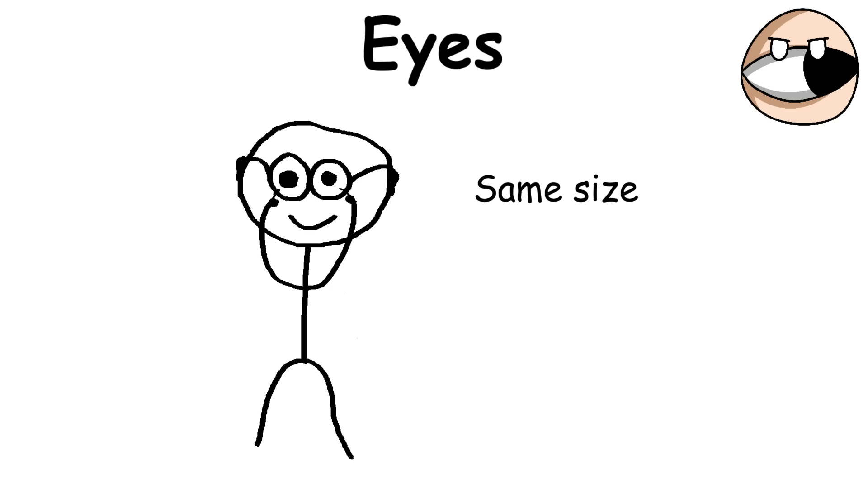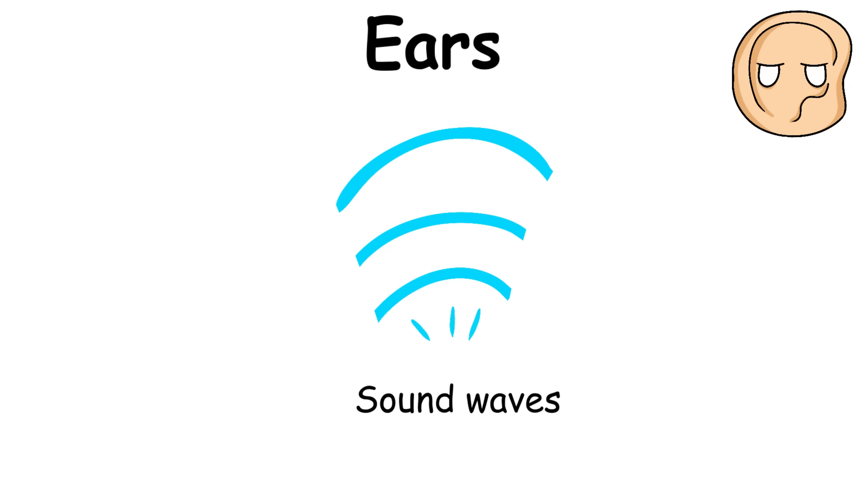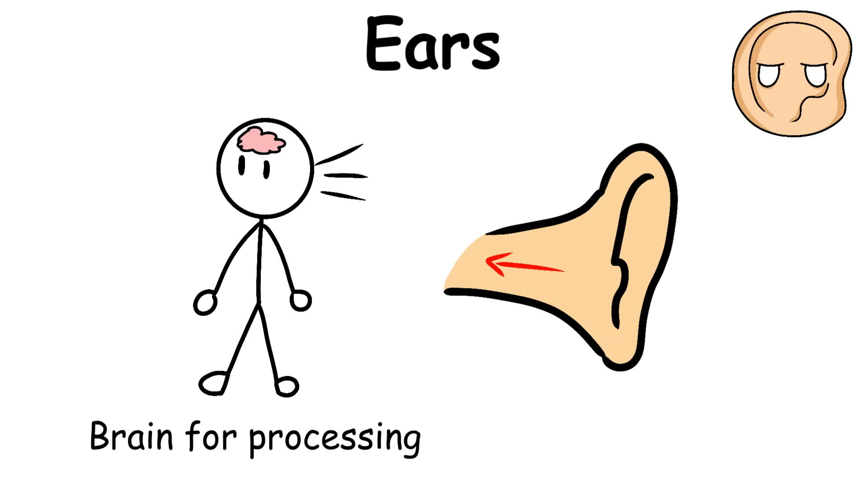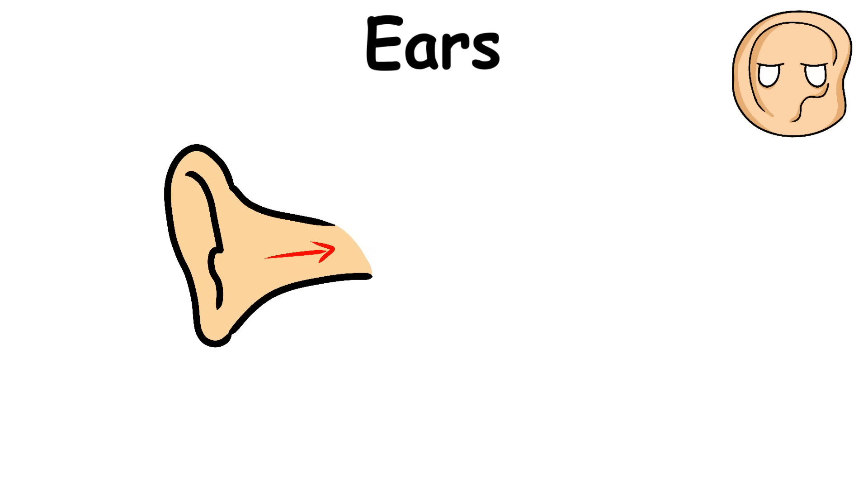Ears are sensory organs that are responsible for detecting sound by making use of sound waves that pass through the ear canal and are sent to the brain for processing. But the ears are also responsible for maintaining balance because deep within the ears is a system that's connected to the eyes and the muscles.